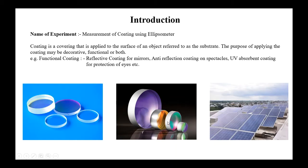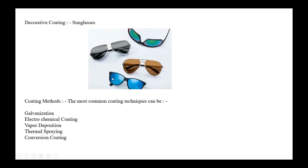These are some examples — lenses used in experiments. Some of them have 100% reflective coating and some have a partially reflective coating. Coating is also used in solar panels. Decorative coatings include sunglasses, where coating is used to enhance their features. Sunglasses may serve both functional and decorative purposes, such as protection from UV rays.